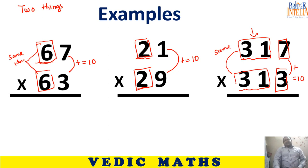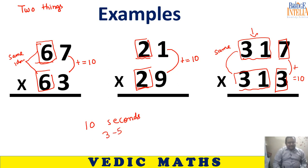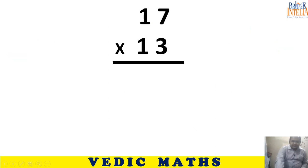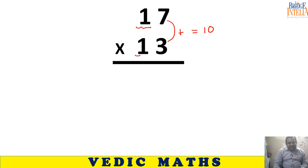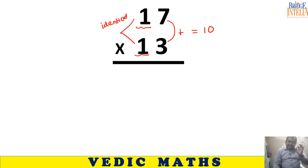In these kinds of questions you can solve within 10 seconds maximum. If you practice, you can solve in 3 to 5 seconds. Let's take the example 17 multiplied with 13. The sum of last digits 7 and 3 equals 10, and the remaining digits are identical — 1 and 1. So these two numbers satisfy the given criteria.